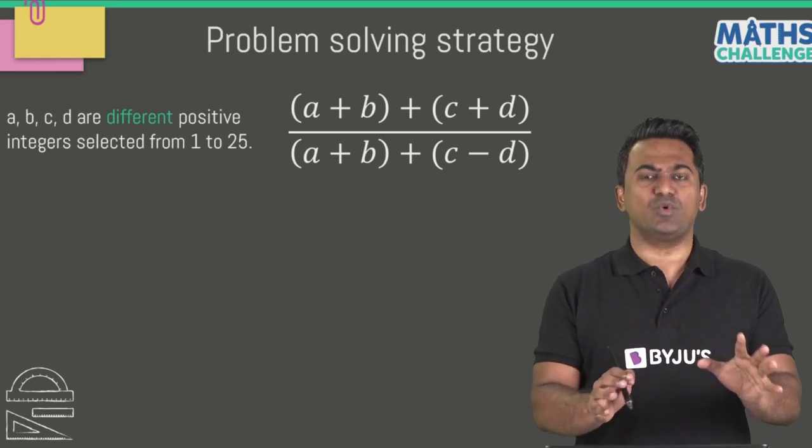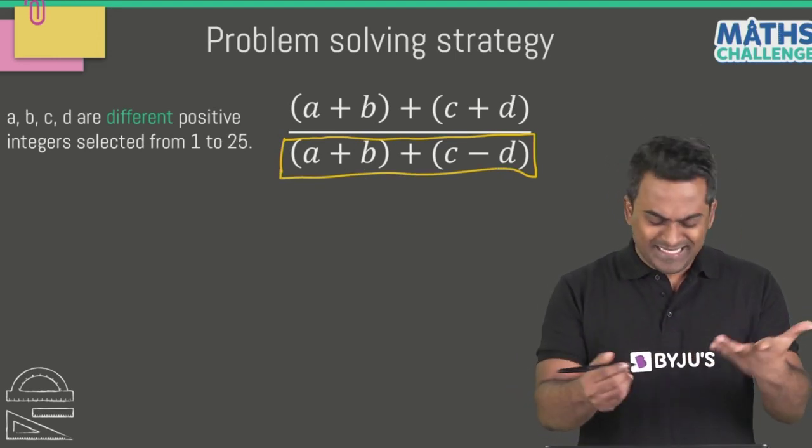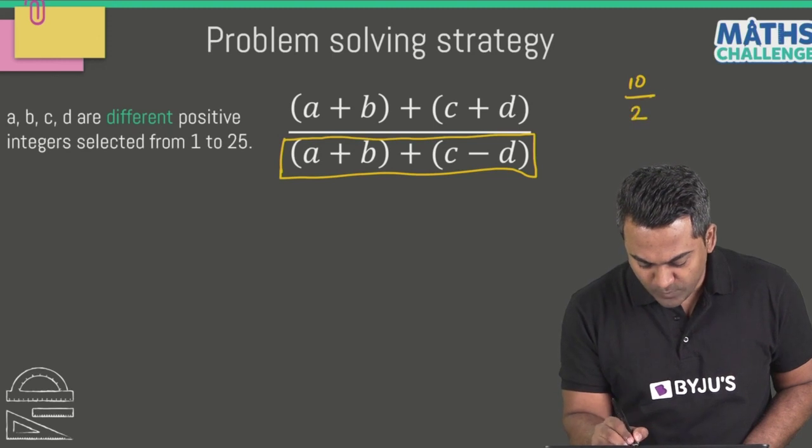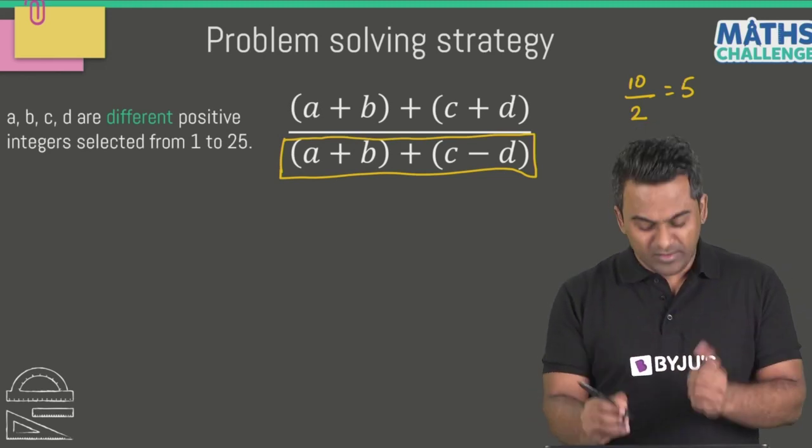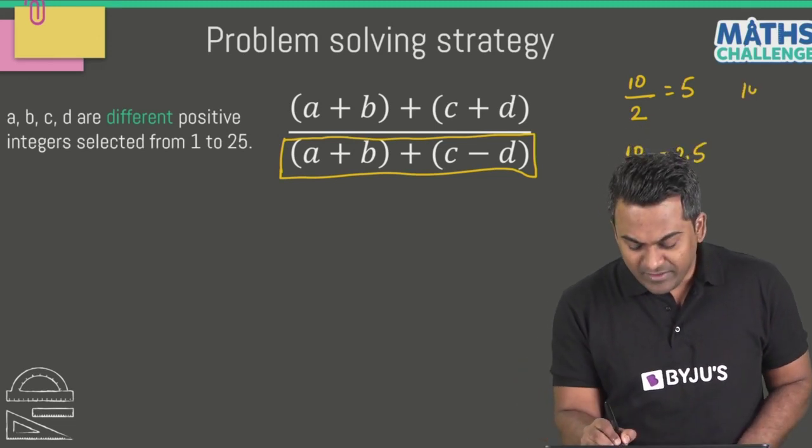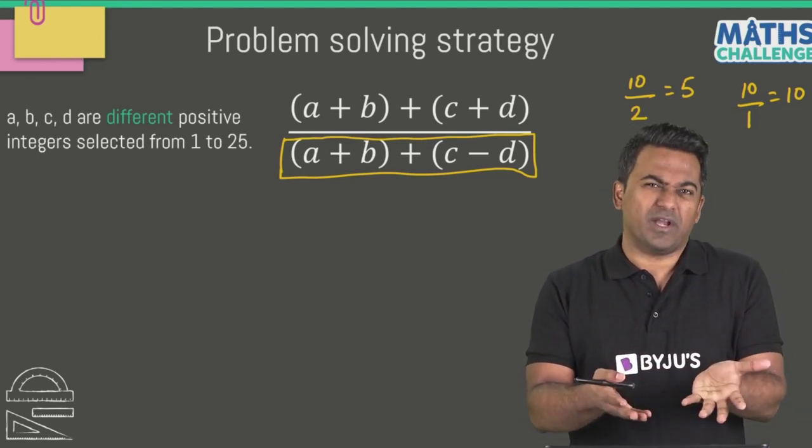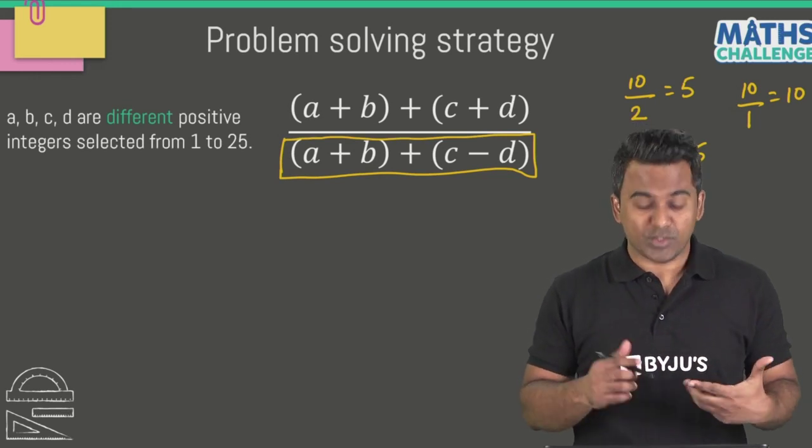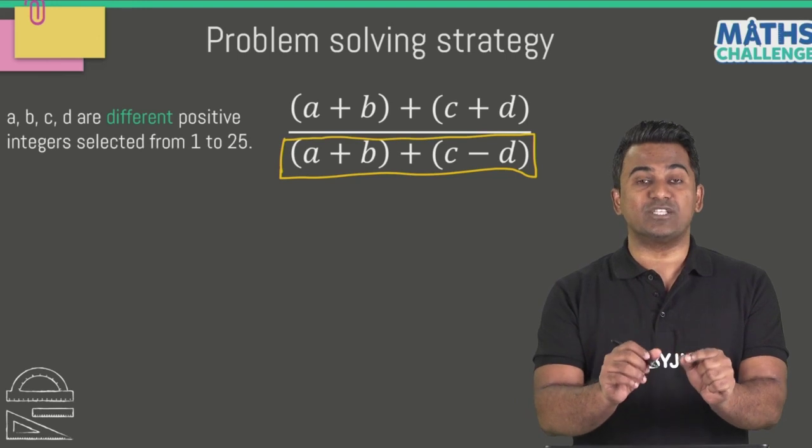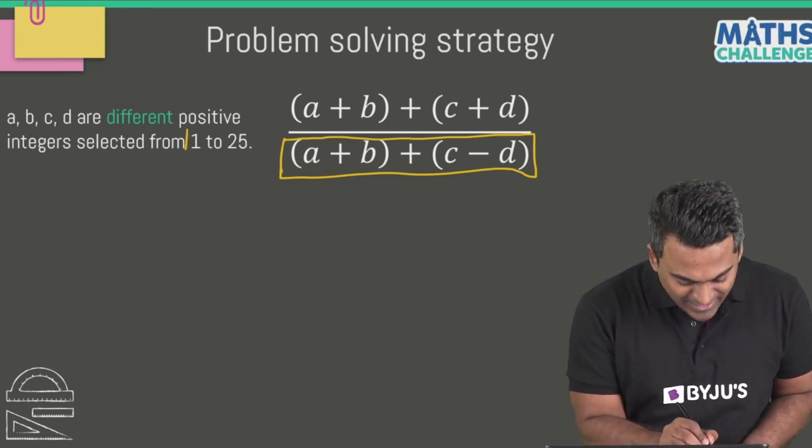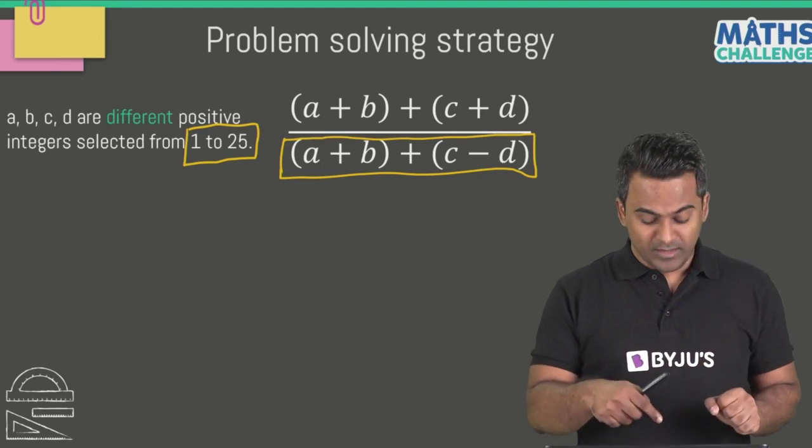First thing, let's try to make this denominator as small as possible. Let's have a look at this: 10 divided by 2 is 5, right? 10 divided by 4 will be smaller - 2.5. 10 divided by 1 is going to be 10. So the smaller the denominator, assuming the numerator is the same, the bigger the answer is going to be. That's the idea here - we are going to try and make this denominator A plus B plus C minus D as small as possible.